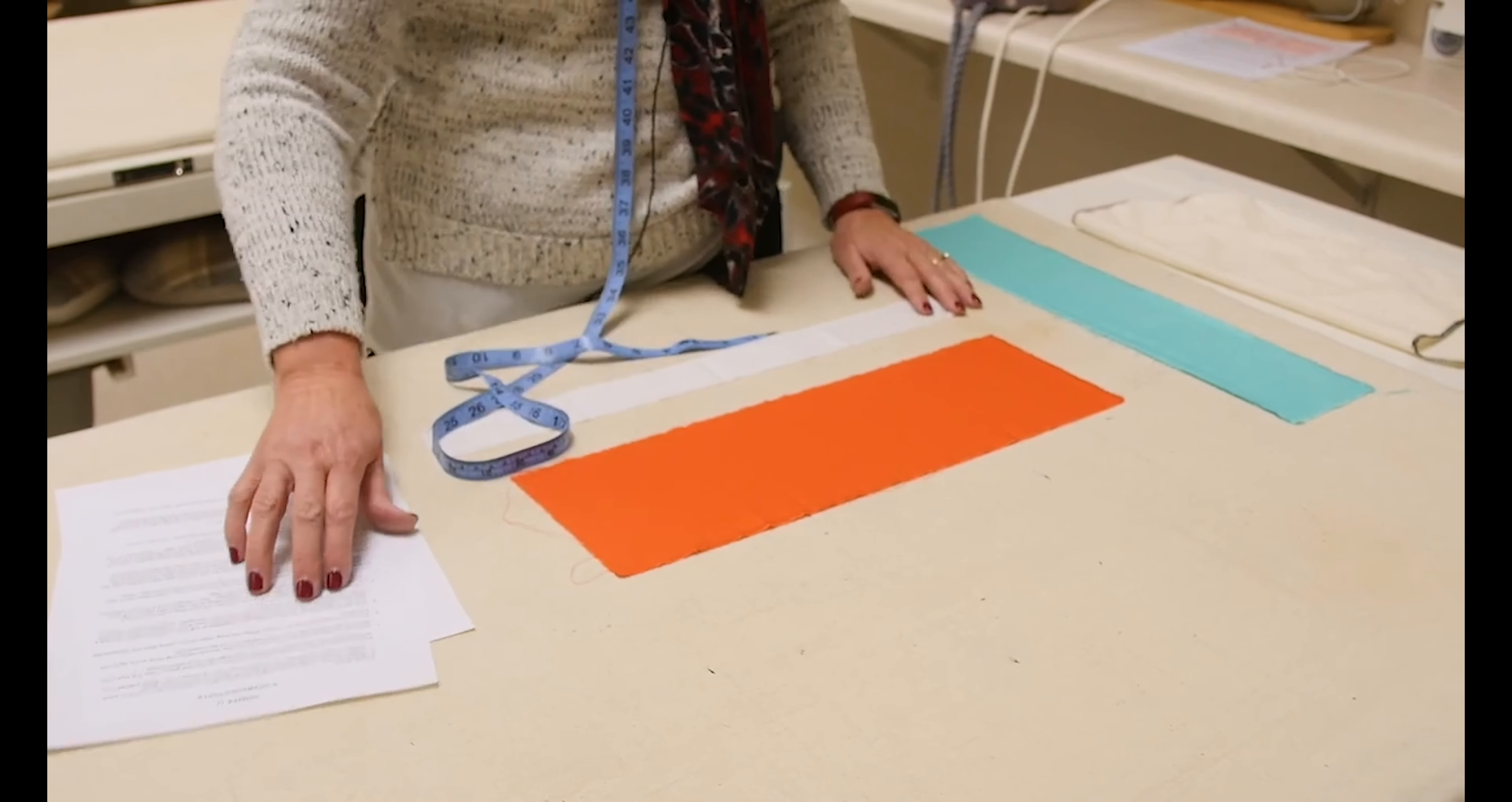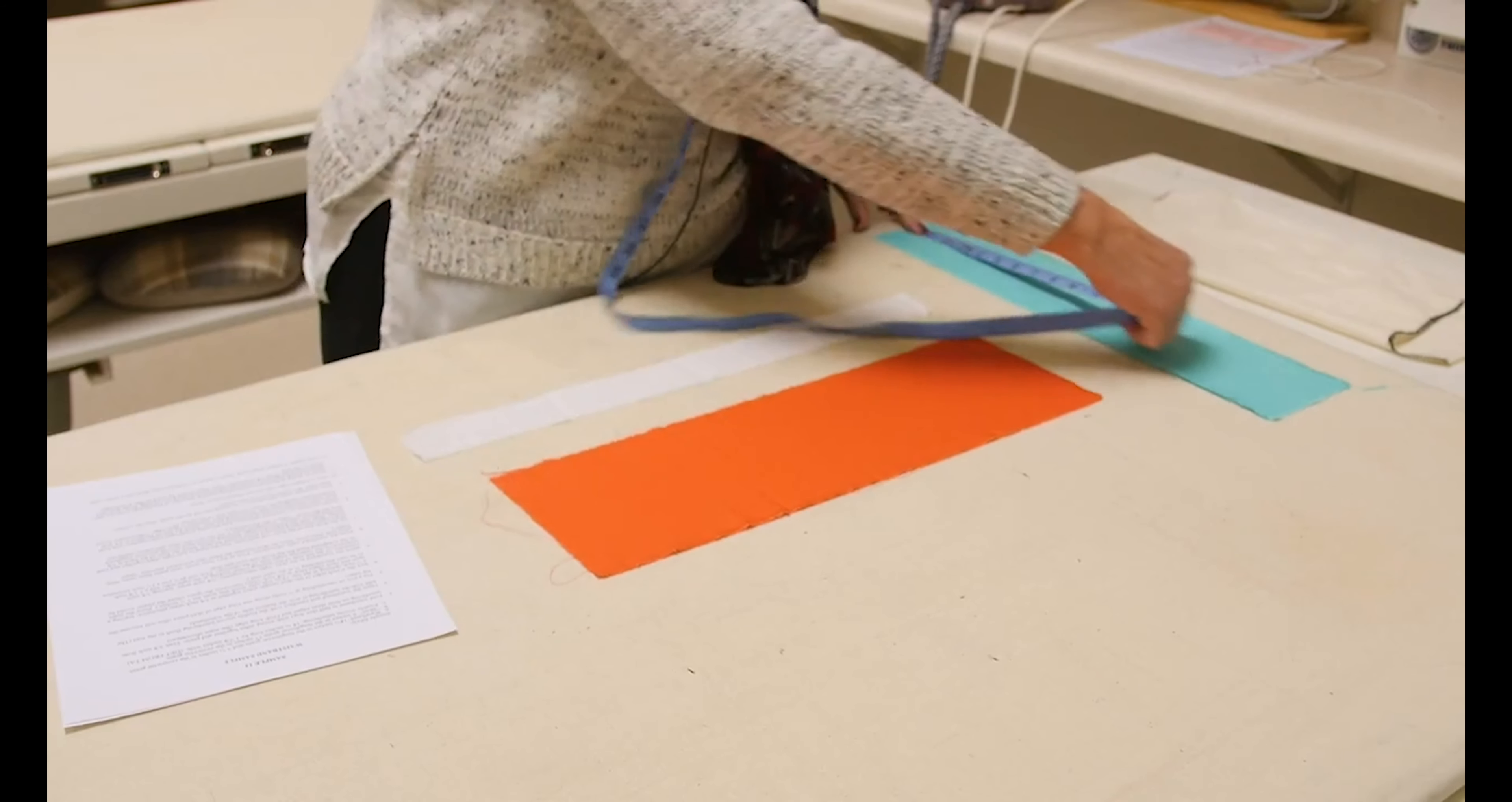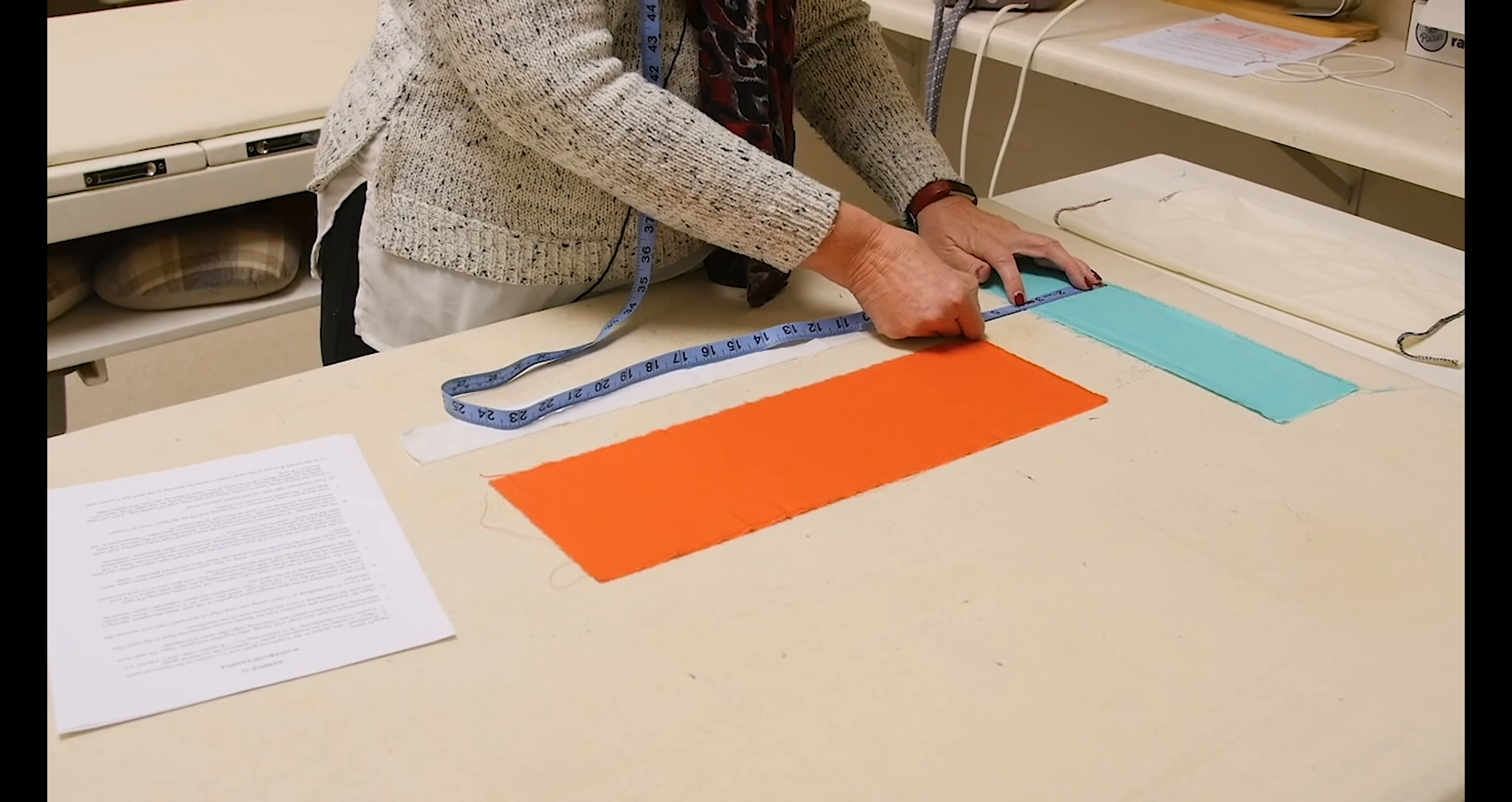And so all of your measurements are listed with lengthwise grain first and then crosswise. So this one is 18 and a half inches long, and then it's three and three fourths inches wide.